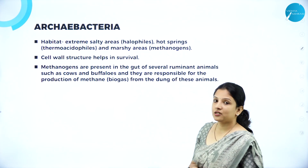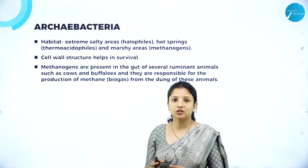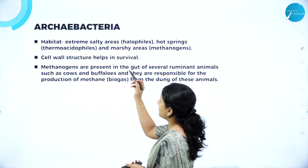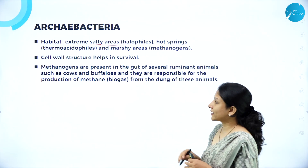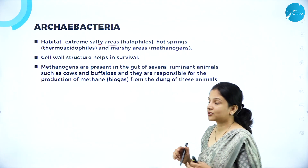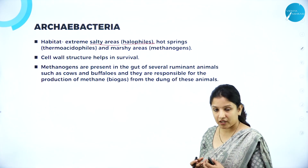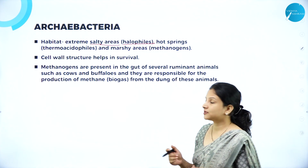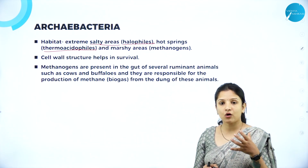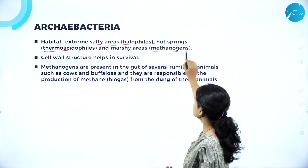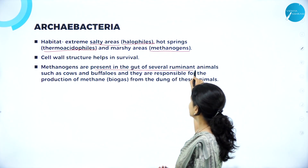Archibacteria — those bacteria which live in extreme environmental conditions or adverse conditions are called Archibacteria. For example, they can live in extreme salt conditions where no other organisms can survive. Those bacteria that live in extreme or high salt conditions are called Halophiles. And they can live in hot springs wherein the temperature is very, very high. Such bacteria that live in hot springs are called Thermoacidophiles. And they can also live in marshy areas — that is swampy or damp areas — and such bacteria are called Methanogens. These Methanogens are also present in the gut of some ruminant animals.